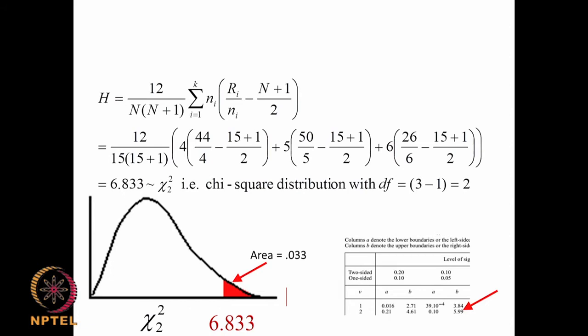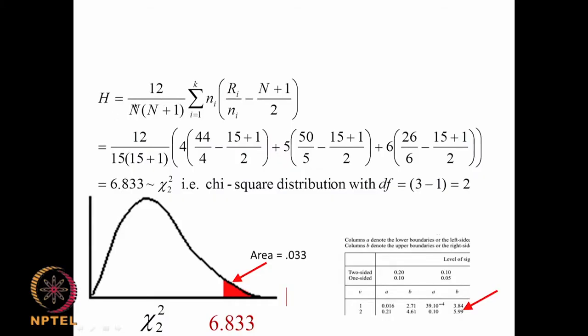To summarize the Kruskal-Wallis procedure: combine all the data, rank them, and add up the set of ranks for each group separately. Then use the formula H = 12/(N(N+1)) times the sum of (Ri squared / ni) minus 3(N+1), and compare it with the chi-square table.